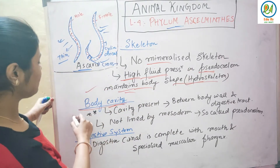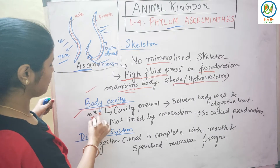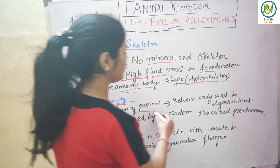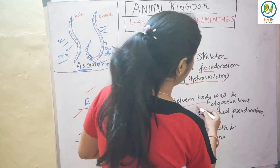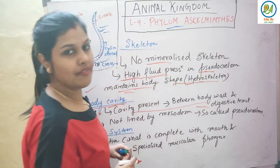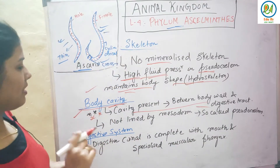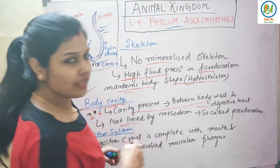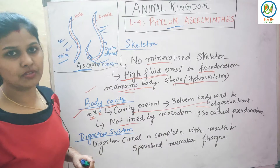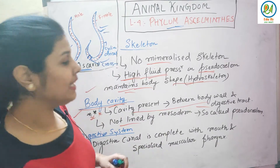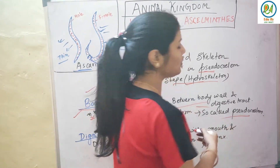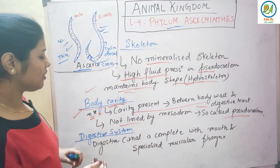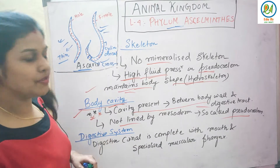Next is body cavity. This is very important. A cavity is present between the body wall and the digestive tract. Unlike Platyhelminthes where it was absent, Aschelminthes have a body cavity, but it is not lined by mesoderm. It is a false coelom — a pseudocoelom.